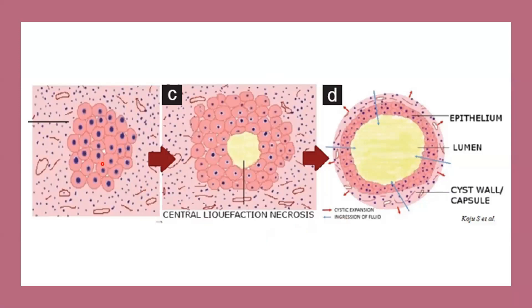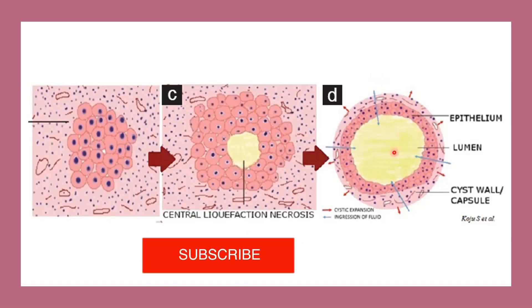the cells from the oral epithelium and enamel organ all have the capacity to proliferate. They form a sphere or mass of cells. The cells in the center stop receiving nutrition and oxygen from the peripheral connective tissue, so they undergo degeneration or liquefaction necrosis, creating a cystic cavity. This empty cavity attracts fluid from outside, which is retained, and this retained fluid increases the hydrostatic pressure.